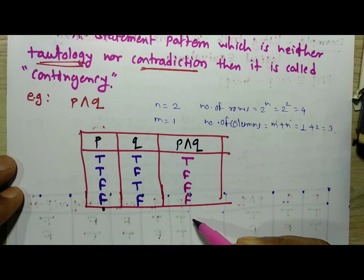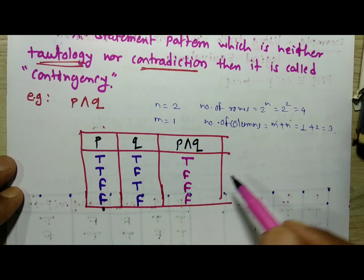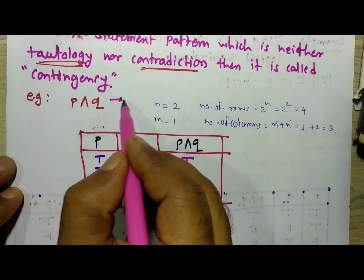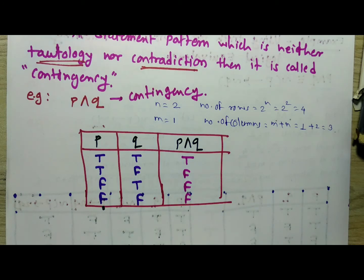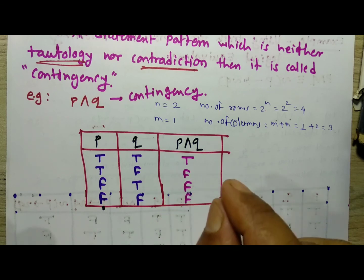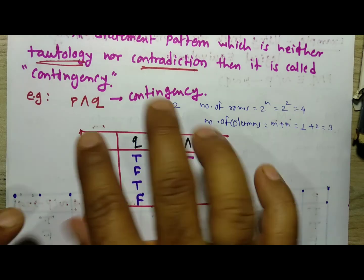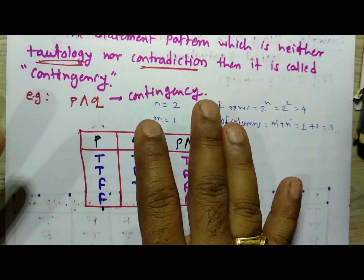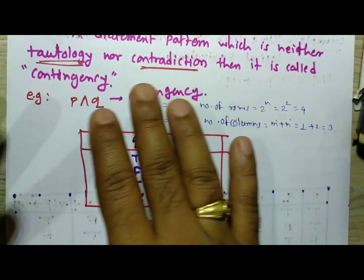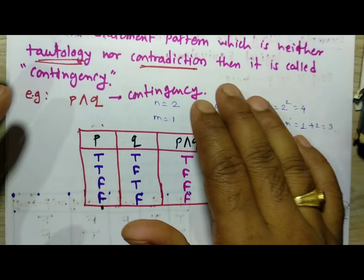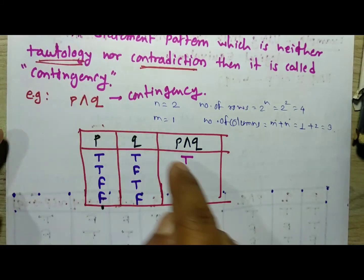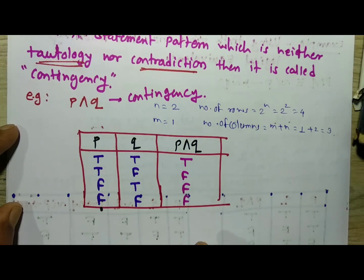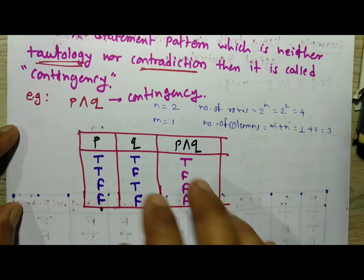The truth values are not completely true and not completely false — they are a combination of true and false. Therefore it is not a tautology and not a contradiction. Hence it is nothing but a contingency. For tautology, truth values are true for every possible combination; for contradiction, truth values are false for every possible combination; and for contingency, it is a combination of true and false.